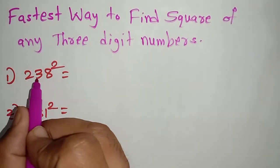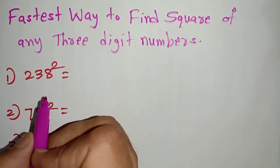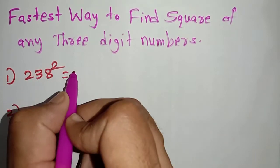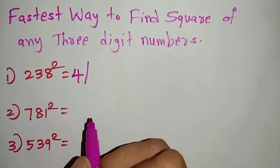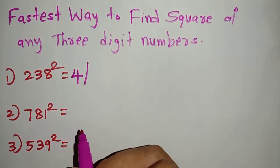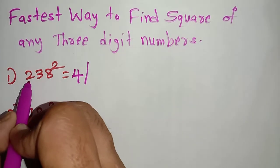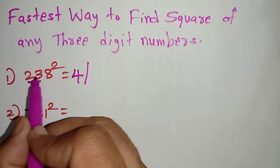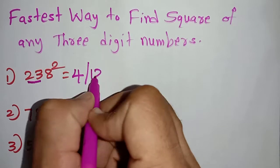First one is 238 squared. The first step is to find the square of the first digit. The first digit is 2, so 2 squared is equal to 4. We write that and make a part. The second step is we have to do the duplex of the first two digits. The first two digits are 2 and 3, so 2 into 3 is 6, and 6 into 2 is 12. We write 12 here.